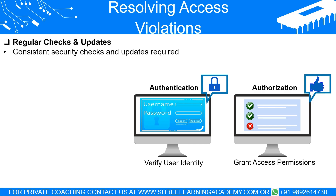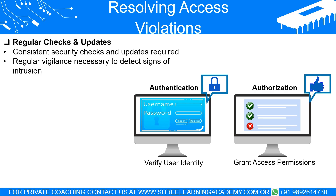It's like maintaining the security of your house — you need to consistently check your logs, update your security system, and stay vigilant to any signs of intrusion. In conclusion, access violations pose serious risks to the security of any system, and understanding how they occur is crucial for maintaining the integrity of our data. By correctly setting up our authentication and authorization protocols, being vigilant for any signs of unauthorized access, and promptly taking action when violations occur, we can keep our systems secure.